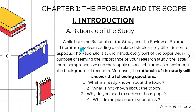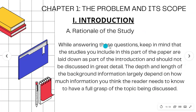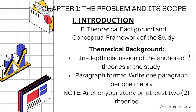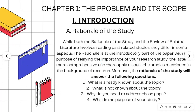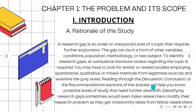While both the Rationale and Review of Related Literature involve reading past studies, they differ. The Rationale is at the introductory part of the paper with the purpose of relaying the importance of your research study. It answers: What is already known about the topic? What is not known? Why do you need to address those gaps? What is the purpose of your study? Studies included in this part should not be discussed in great detail — the depth depends on how much information the reader needs to fully grasp the topic.